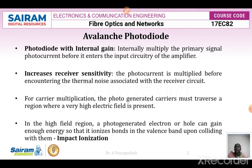Next, we have to increase the receiver sensitivity. The receiver sensitivity means my amplifier circuitry should be able to detect even a weak signal. In that case, what this photodiode has to do is multiply the photocurrent even before encountering the thermal noise. In the receiver circuit, we will have thermal noise, and before the thermal noise is imposed onto this photocurrent, this photocurrent should be multiplied. That means my photodetector should have higher sensitivity as well as high gain.